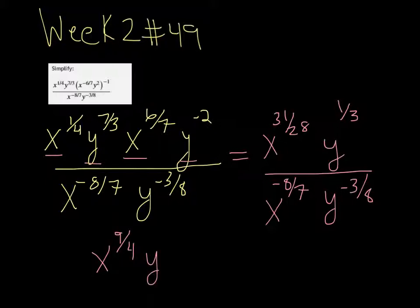Doing the same thing with the y's. That would be 1/3 minus a negative 3/8. And that's 17 over 24. And that's the answer.